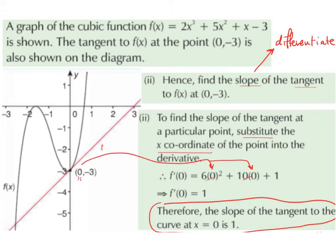So f'(0) is going to be 6 times 0² + 10 times 0 + 1. Because the derivative was 6x² + 10x + 1. So all I have done here is just swapped the x-values for 0s. And I got that because the x part of my coordinate is 0. Okay, 6 times 0² is 0, that cancels out. 10 times 0 is 0, that cancels out. So I am just left with 1. So the slope of the tangent to the curve at x equals 0 is going to be 1. So the slope of this line here is 1.